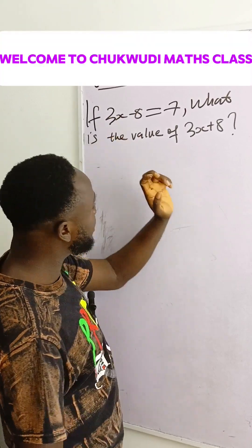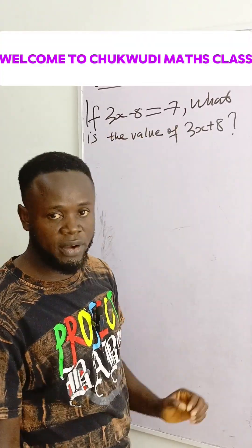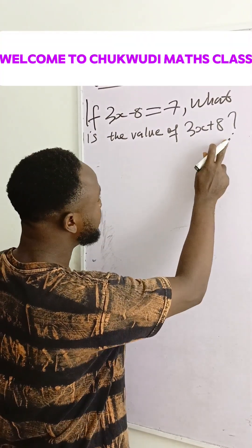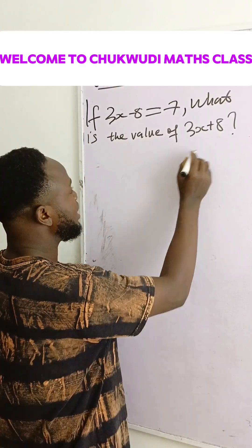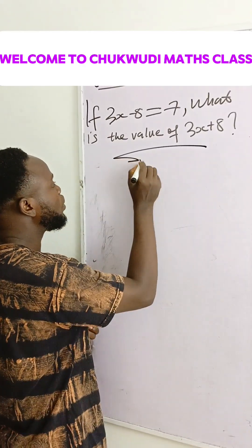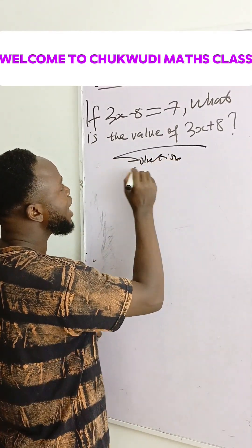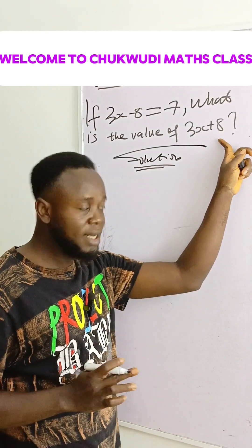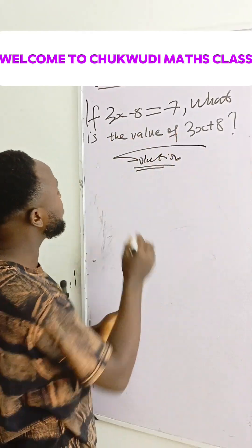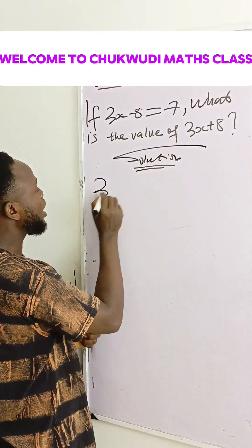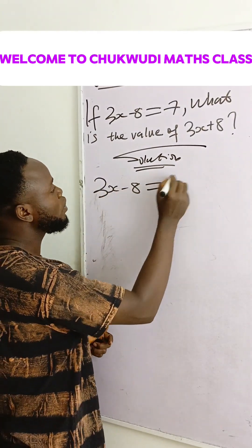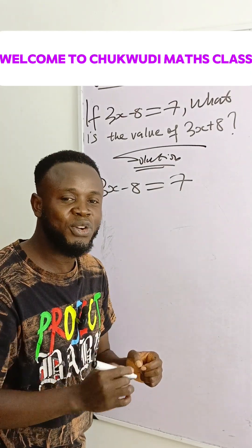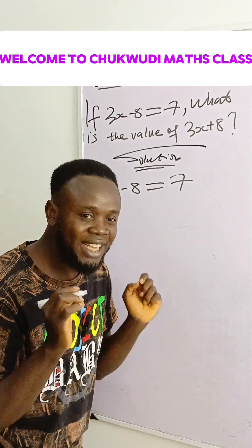If 3x minus 8 is equal to 7, what is the value of 3x minus 8? For us to find this, we first have to find the value of x. From the equation 3x minus 8 equals 7, we do what is called collection of like terms.